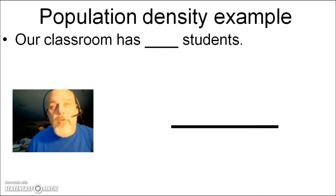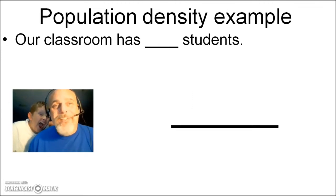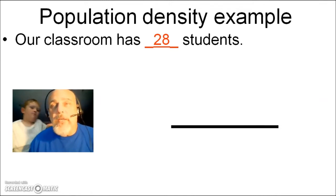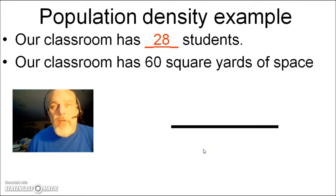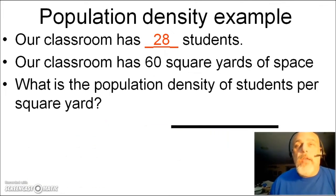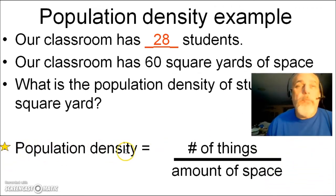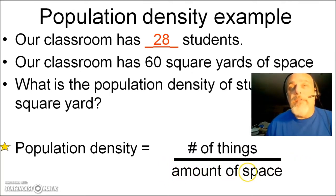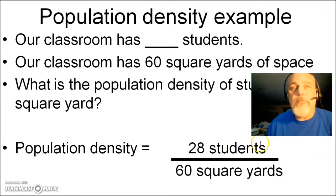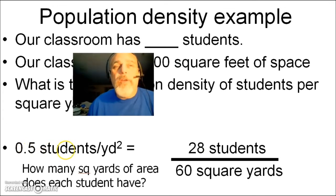Population density can be calculated. Let's run through a sample. Consider our classroom has 28 students, and we measure the area of the classroom at 60 square yards. What is the population density of our classroom, measured in students per square yard? We use this formula — write it down: population density equals the number of things divided by the amount of space. So 28 students divided by 60 square yards gives us 0.5 students per square yard.